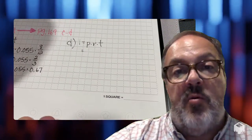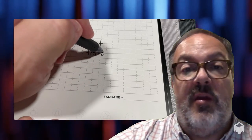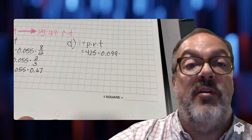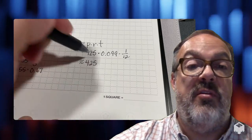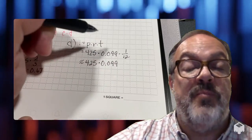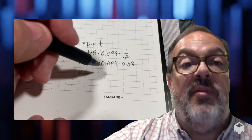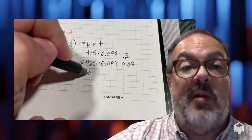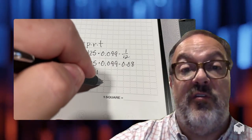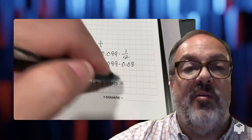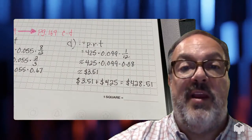In problem D, we're looking at how much I'm going to have to pay on my credit card bill. The office supplies cost $425. There's a 9.9% interest rate, and we're only figuring out simple interest for one month. I know from a previous problem that 1 over 12 is 0.083 repeating, so I'll simplify that to 0.08. After that one month, I'm responsible for paying $3.51 in interest, but I still have to pay the $425 for the office supplies. So the total I'm going to have to pay is $428.51.